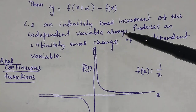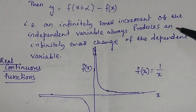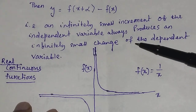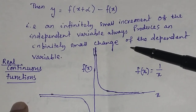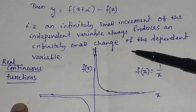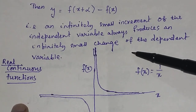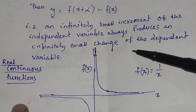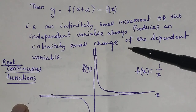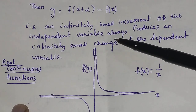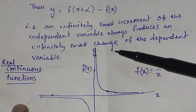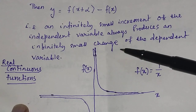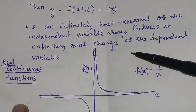The dependent variable y will change by f(x + alpha) minus f(x). That is, an infinitely small increment of the independent variable always produces an infinitely small change of the dependent variable. If you change the independent variable in a very small manner, then the dependent variable also changes in a small manner.